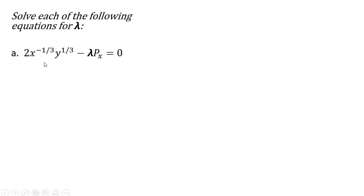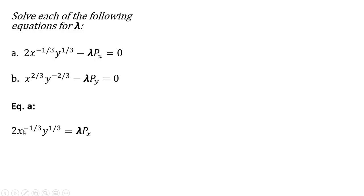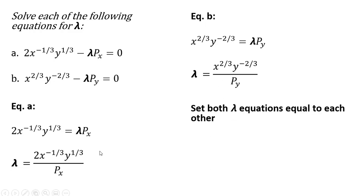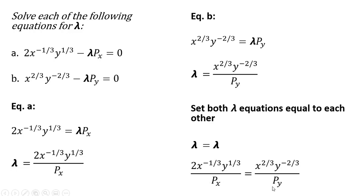We're going to solve each of the first two partial derivative equations for lambda. For equation A — the partial derivative with respect to good x — we divide through by the price of good x to get lambda. For equation B — the partial derivative with respect to good y — we divide through by the price of good y to get lambda. Setting both lambda expressions equal to one another, we get this result.